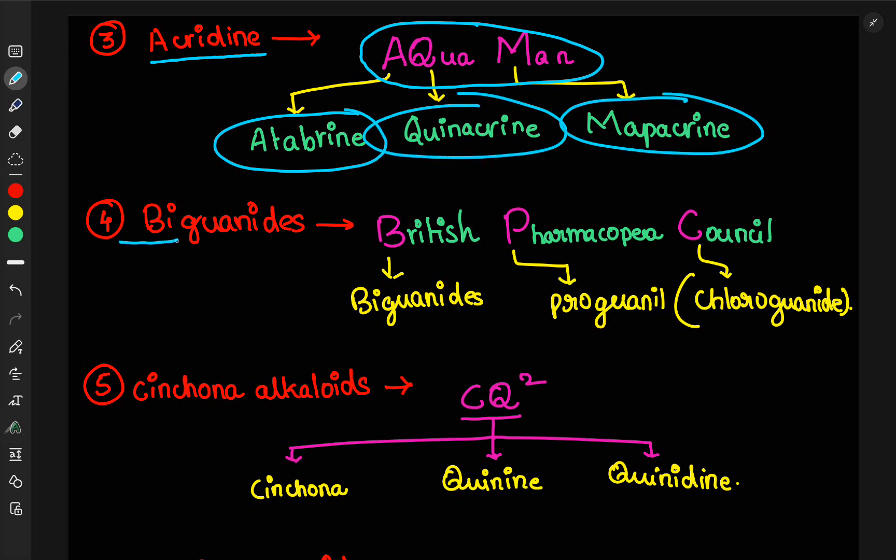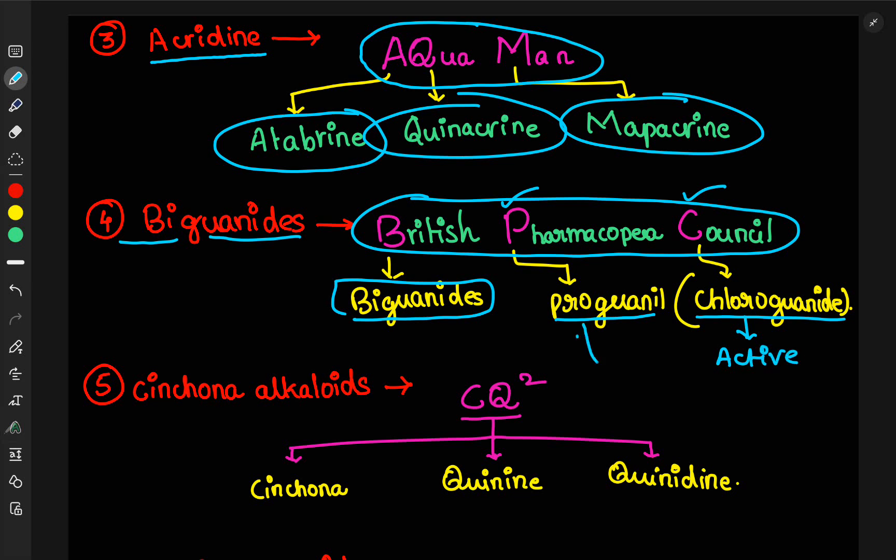Next, fourth one, biguanides. These are actually belongs to the anti-diabetic drugs, but these drugs are also useful for the antimalarial category. Here, you remember the British Pharmacopoeia Council. B represents the biguanides and P and C represents the examples, proguanil. Actually, chloroguanide is the active ingredient of proguanil.